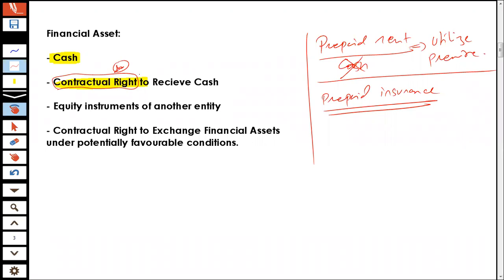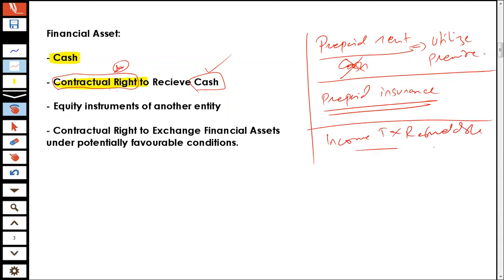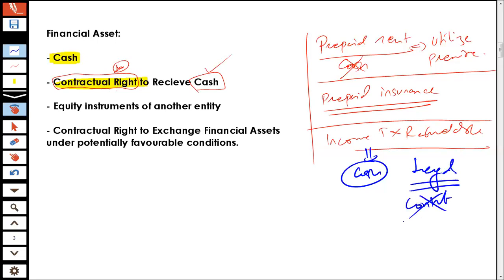So basically, what's a financial asset? A financial asset is a contractual right to receive cash. Now, there's another concept which is income tax refundable. If I talk about income tax refundable, it is a right to receive cash, but it is actually a legal right to receive cash — not a contractual right to receive cash — and therefore it is not going to be a financial asset. It's going to be an asset under IAS 12.